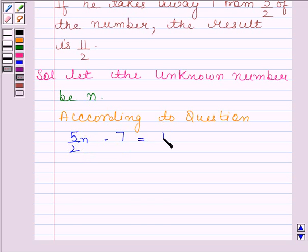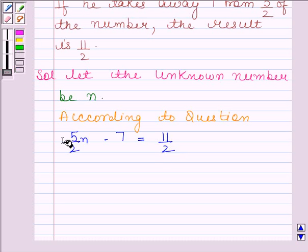he gets 11 by 2. So, our required equation is 5 by 2 N minus 7 equals to 11 by 2.